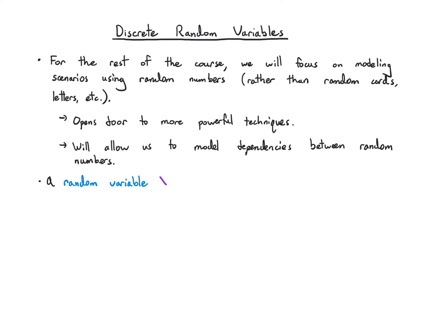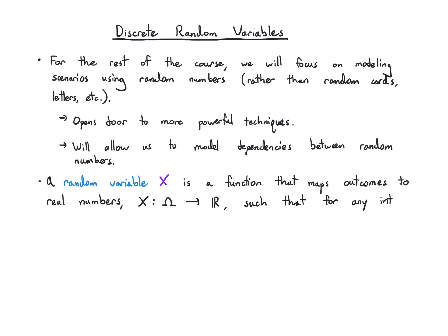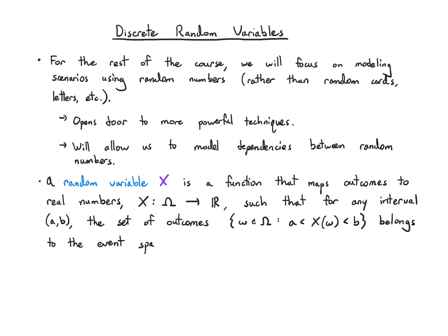Formally speaking, a random variable — denoted by a capital letter, in this case X, but it could be Y, Z, or anything else — is a function that maps outcomes from the sample space to real numbers. It takes elements of the sample space Ω to the real line such that for any interval a to b, the set of outcomes mapping into that interval belongs to the event space E. This is a technical definition; you don't need to worry about it. Just presume throughout the course that every random variable has this property.